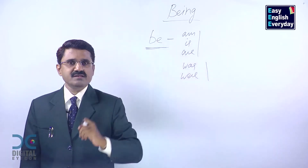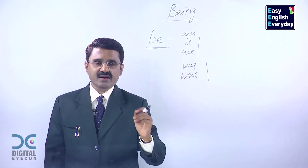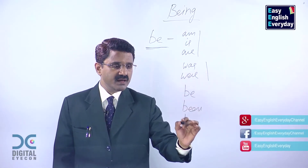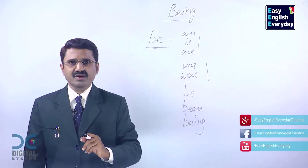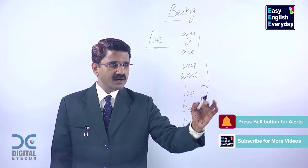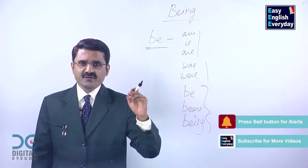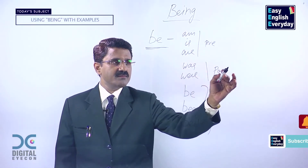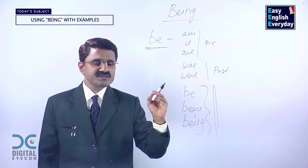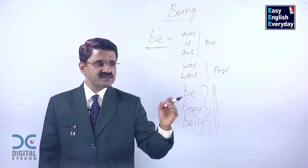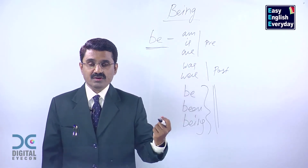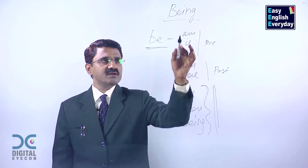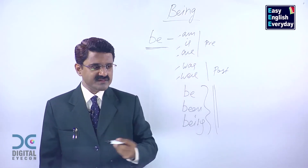For the detailed uses, please see our earlier videos on am, is, are and was, were. Now you have three more members: be, been, and being. B plus ing equals the 'being' form. Now these three members do not have any fixed specific tense, whereas am, is, are indicate present and was, were indicate past. Their job is to give technical support to am, is, are, was and were wherever it is necessary.